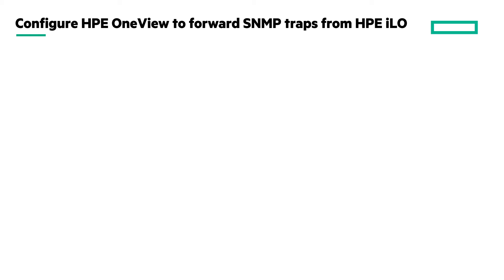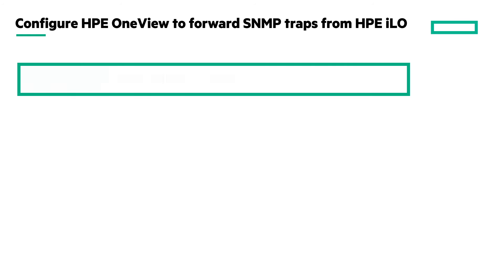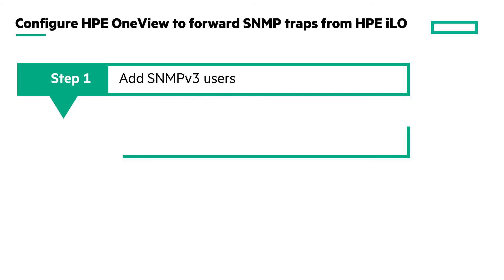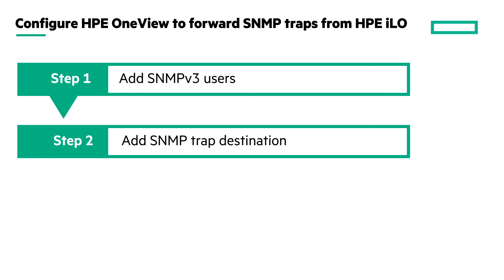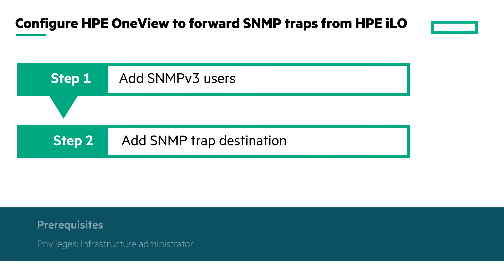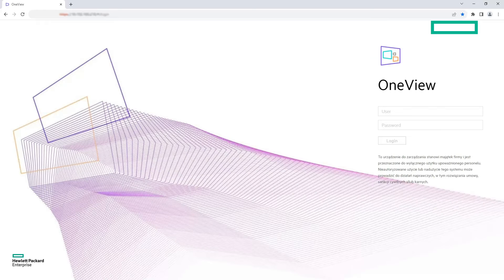To configure HPE OneView to forward the SNMP traps from HPE iLO to your SNMP monitoring application, you must add SNMP V3 users and then add SNMP trap destinations. You must have infrastructure administrator privileges to perform all the steps.